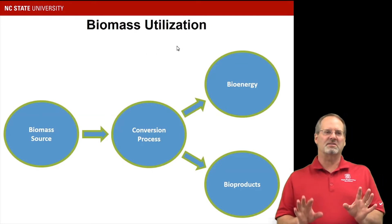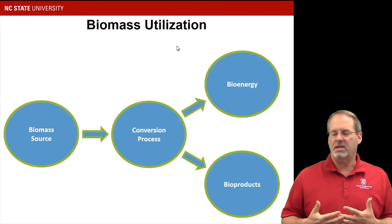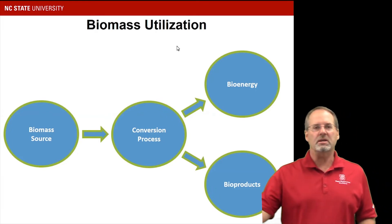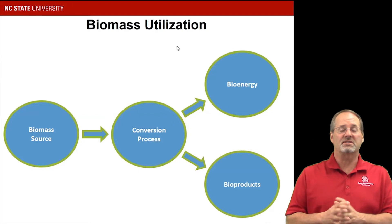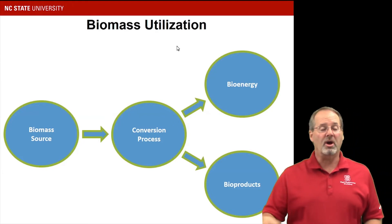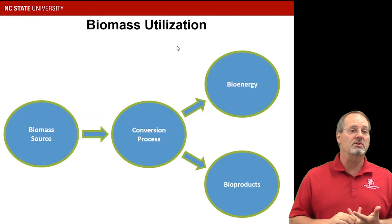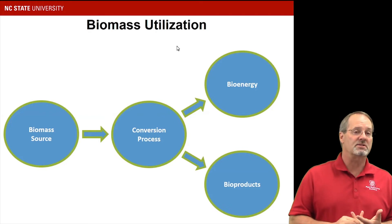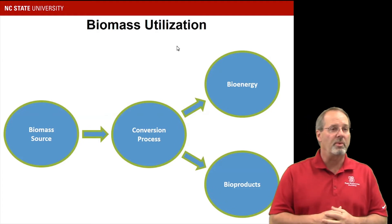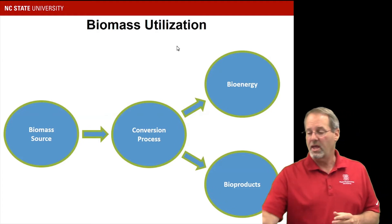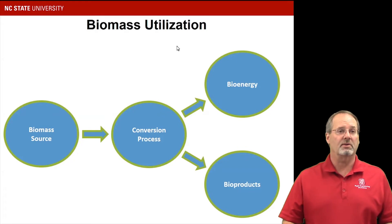To summarize: bioenergy includes things like steam and electricity produced in a stationary place, while bioproducts are materials, chemicals, and fuels used in non-stationary devices. Of course, we use renewable biomass sources and convert them in an environmentally friendly way.